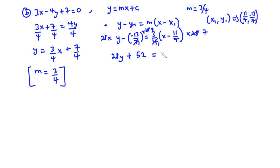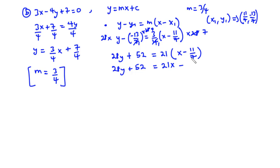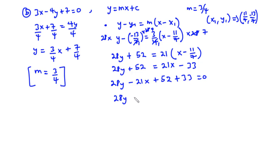Expanding and simplifying: 28y plus 52 equals 21x minus 33. Rearranging all terms to one side gives 28y minus 21x plus 52 plus 33 equals 0, which simplifies to negative 21x plus 28y plus 85 equals 0. This is the equation of the line through M parallel to 3x minus 4y plus 7 equals 0.